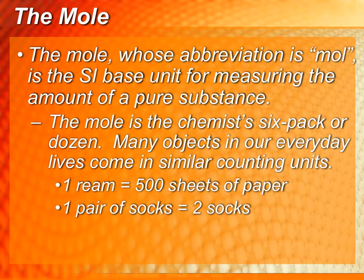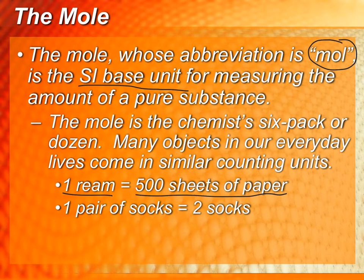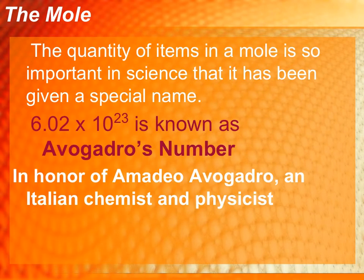So when we see the mole abbreviated, I think it's kind of weird, but the abbreviation literally is just M-O-L, like they dropped the E. And this is known as the SI unit for measuring the amount of a pure substance. The mole is the chemist's six-pack or dozen. Many objects in our everyday lives come in similar counting units. If I said I need a ream of paper, that's going to be 500 sheets of paper. Or if we use the term pair, that means you have two socks. So this number 6.02 times 10 to the 23rd is known as a mole, but it's also given the name of Avogadro's number, and that's because he was a physicist that is credited with coming up with this number.